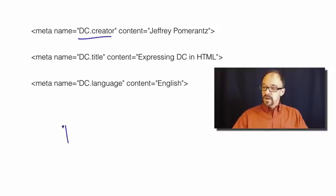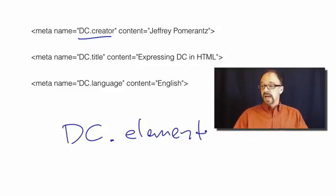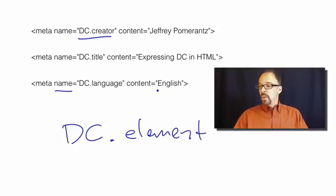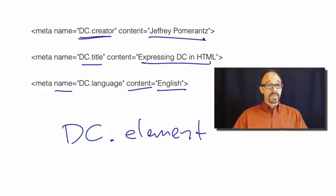This is the standard format for representing Dublin Core metadata in a meta tag: DC dot element name — creator, title, language, et cetera — is the value you give to the name attribute. Then what you would assign for the value of the element is given to the content attribute. So DC title is the title of these slides, DC creator is me, et cetera.